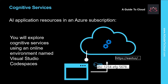Azure provides a set of cognitive services that encapsulate common AI workloads, including computer vision tasks. To use cognitive services, you must provision a resource in an Azure subscription. This can be a standalone or service-specific resource — for example, a computer vision resource — or a general cognitive services resource. Using a standalone service-specific resource enables you to manage cost and access to that service independently of other services you may be using.